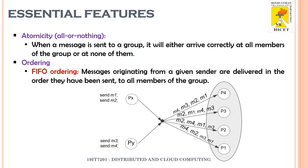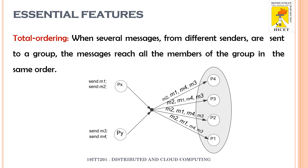There are a number of essential features of group communication. The first is atomicity — all or nothing: when a message is sent to the group, it will either arrive correctly at all members or at none of them. The second feature is ordering: FIFO ordering means messages from a given sender are delivered to all group members in the order they were sent. Total ordering means when messages from different senders are sent to a group, all members receive those messages in the same order.